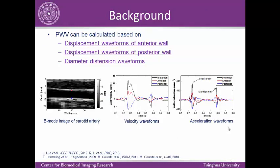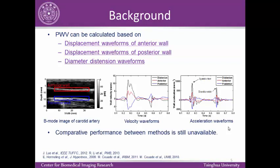According to the literature, different kinds of pulse waveforms can be used to estimate pulse wave velocity. Some studies use displacement waveforms of the anterior wall, shown here as the red curve, and displacement waveforms of the posterior wall, shown here in the blue curve. Dynamic distension waveforms, however, are more frequently used in pulse wave estimation, obtained by subtracting the posterior waveforms from the anterior waveforms. A comparative performance between these three methods is still unavailable.